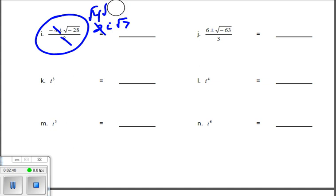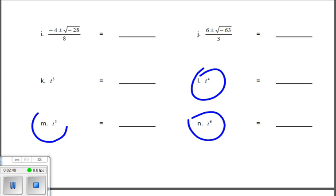Third piece of advice: these weird i to the fifth, i to the sixth, i to the fourth—what are you supposed to do? What do you know? i² equals negative 1. From there it becomes easy. You break all of these into i² times something else. Like i³, that's i² times i.